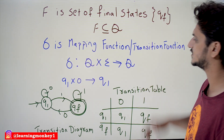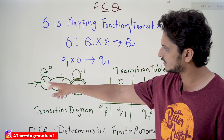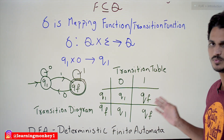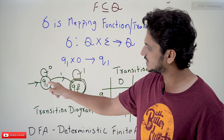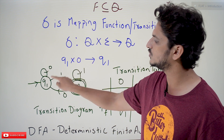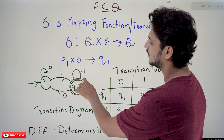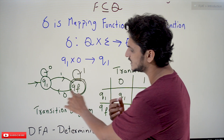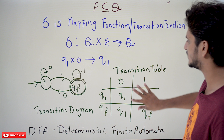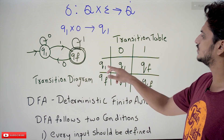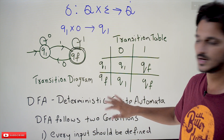Our complete logic can be represented in two ways: a transition diagram and a transition table. In the transition diagram, the initial state is shown with an arrow. Q1 on input 0 → Q1; Q1 on input 1 → QF; QF on input 1 → QF; QF on input 0 → Q1. The same information is placed in tabular form as the transition table.